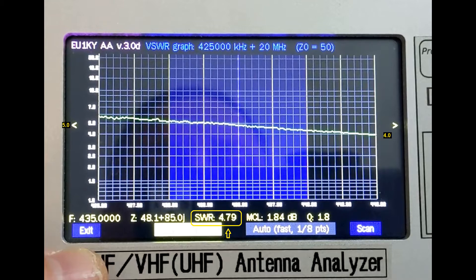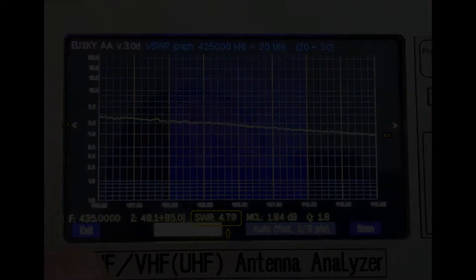Of course, getting a one-to-one match—everything has to be perfect and it never is—so all we can do is try to get it as close as possible. But ideally you do want to be at least under 1.5 to 1 to get the best possible results with your radio.